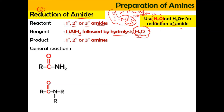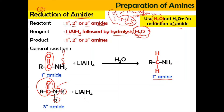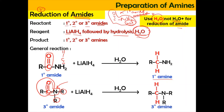For the general reaction: a primary amide can be reduced using lithium aluminium hydride followed by hydrolysis (water) to produce a primary amine — the C=O is reduced to CH2. Similarly, if you have a tertiary amide (nitrogen attached with three alkyl groups), it's reduced using lithium aluminium hydride with water (not acidic H3O⁺), forming a tertiary amine, with C=O becoming CH2.